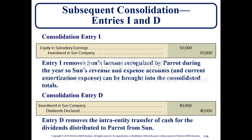For consolidation entry I: equity in subsidiary earnings is debited for $93,000 and investment in Sun Company is credited for $93,000. Entry I removes Sun Company's income recognized by the parent during the year so Sun's revenue and expense accounts can be brought into the consolidation totals. Originally it was $100,000 in net income minus $7,000 in amortization, which gives the $93,000.